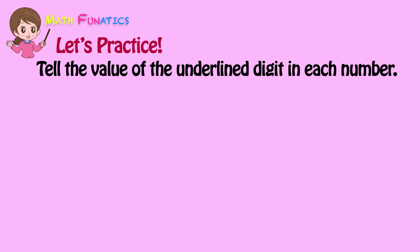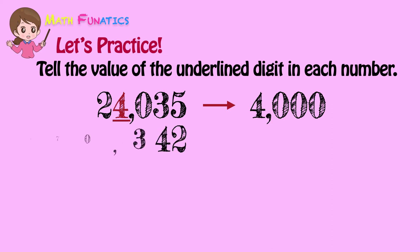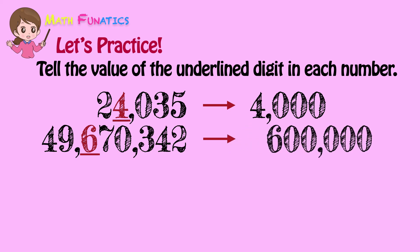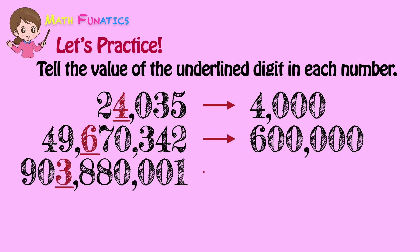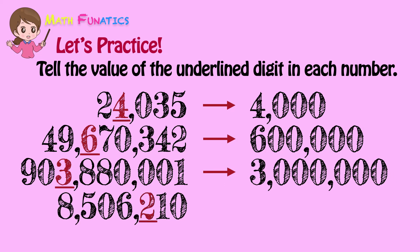Now let's practice what you've learned with these examples. Tell the value of the underlined digit in each number. 4 is the underlined digit in the first number — its value is 4,000. In the next number, 6 is the underlined digit and it has a value of 600,000. Next is 3 — its value is 3,000,000. And for our last number, 2 is the underlined digit and its value is 200.